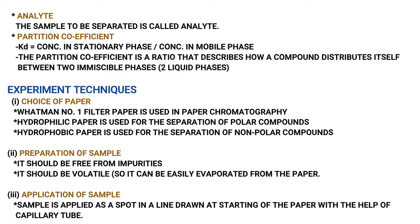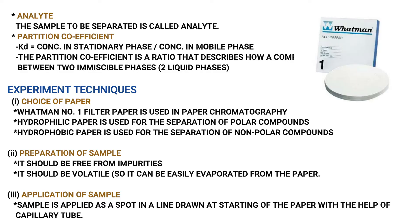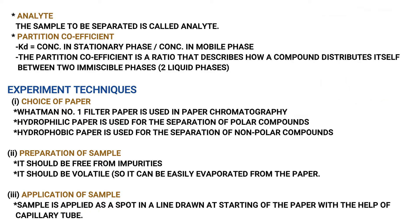Next are the experimental techniques — there are seven points. First point is the choice of paper. Whatman No.1 filter paper is used in paper chromatography — normal paper is not used; specially designed Whatman No.1 filter paper is used. Hydrophilic paper is used for the separation of polar compounds. Hydrophobic paper is used for the separation of non-polar compounds.